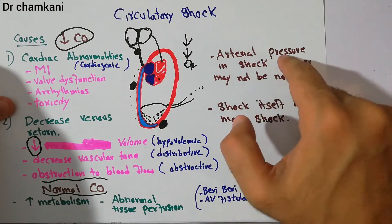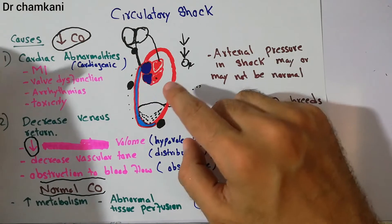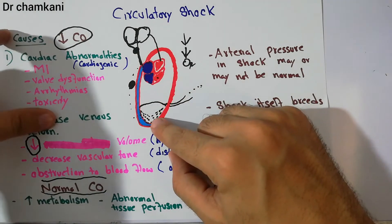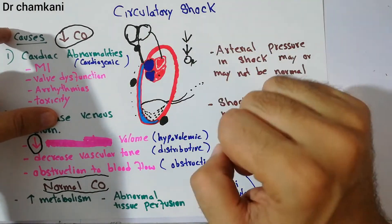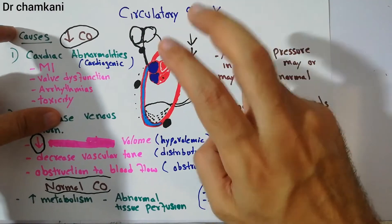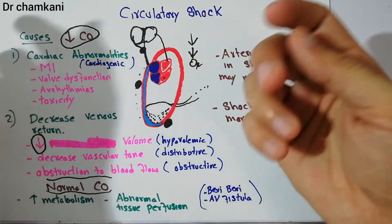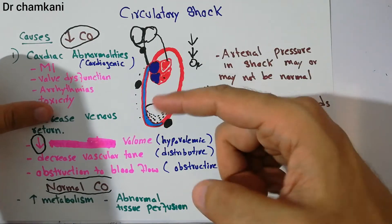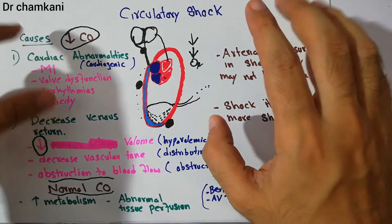The arterial pressure in shock may or may not be normal. If there is decreased blood supply to the tissues, there are compensatory mechanisms — like the sympathetic system — which will basically lead to normal arterial pressure despite the problem. So the arterial pressure in shock may or may not be normal.